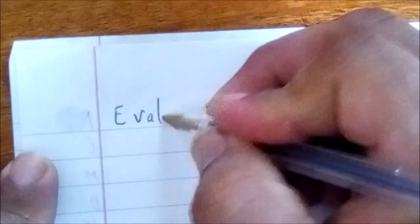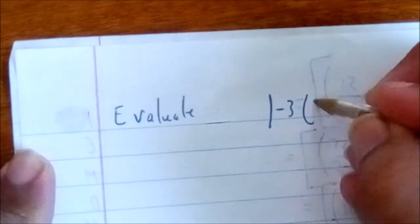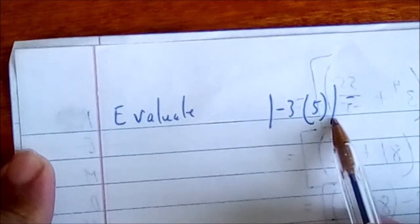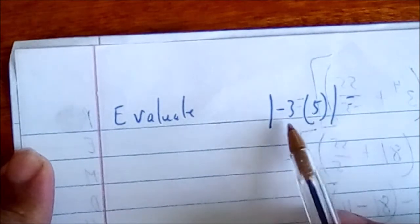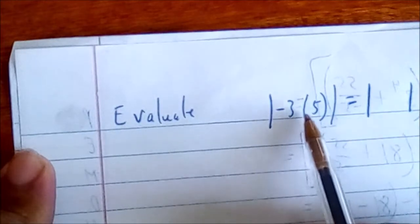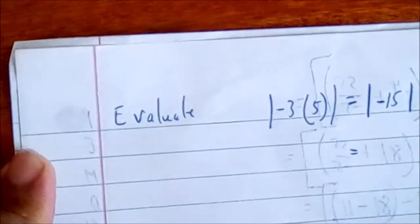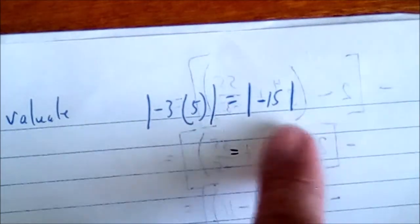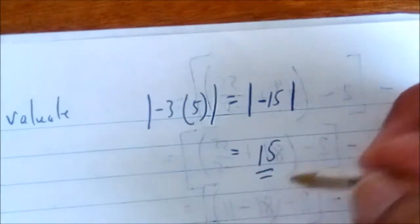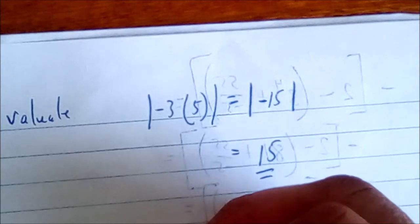Evaluate: the absolute value of negative 3 times 5. We keep our absolute value symbol. Inside we see negative 3 times 5, which equals negative 15. Now, the absolute value of negative 15 simply means make this inside value positive — which gives us 15. Done.